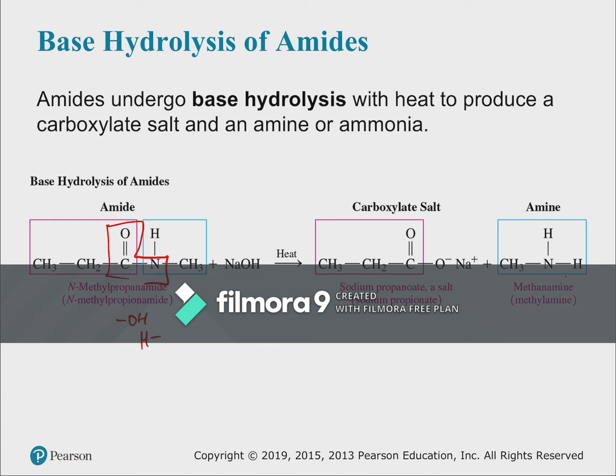In base hydrolysis: the same bond is split, OH goes to the carboxylic acid side and H goes to the amine side. However, the base present reacts with the acid as soon as it forms, pulling off the hydrogen and forming water — leaving the carboxylate ion (negatively charged). So: acid hydrolysis gives an ammonium salt; base hydrolysis gives a carboxylate salt. Make sure to show the correct charges for each.